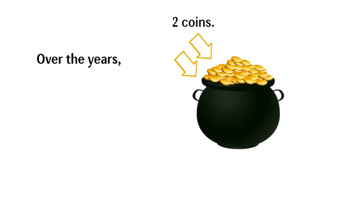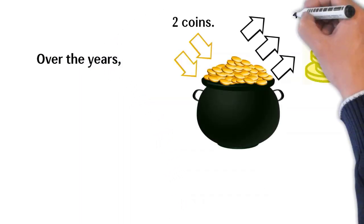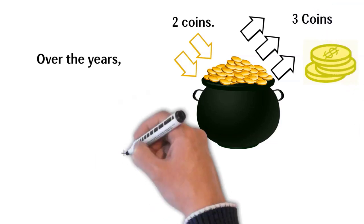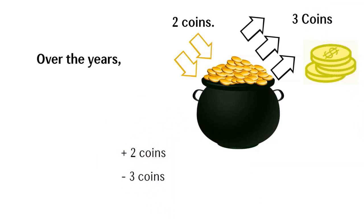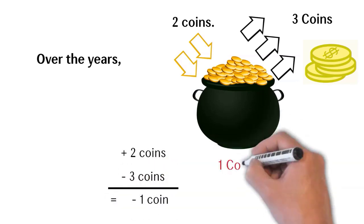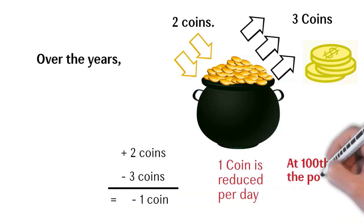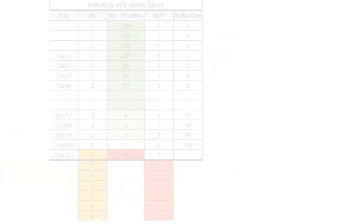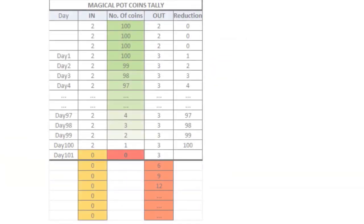But over the years when the needs of that person are increased beyond two coins, now he takes out three coins each day. Addition of two coins and removal of three coins means net one coin is removed each day. This will deplete the pot in hundred days. In the hundredth day, the pot will be empty.